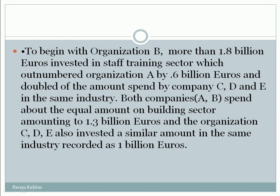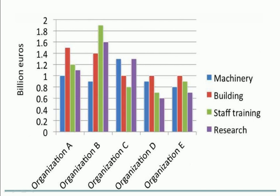Both companies A and B spent about an equal amount on the building sector, amounting to 1.3 billion euros. Organizations C, D, and E also invested a similar amount in the same sector, recorded at 1 billion euros.